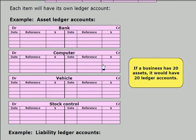Each item will have its own ledger account. Here are some examples of asset ledger accounts: there's a bank ledger account, a computer ledger account, a vehicle ledger account, a stock control ledger account, and so on. If a business has 20 assets, for example, it would have 20 ledger accounts. Each asset has its own record and we call these records ledger accounts.